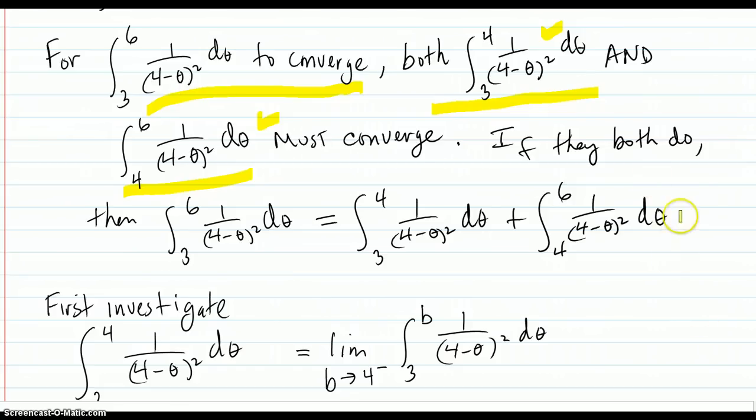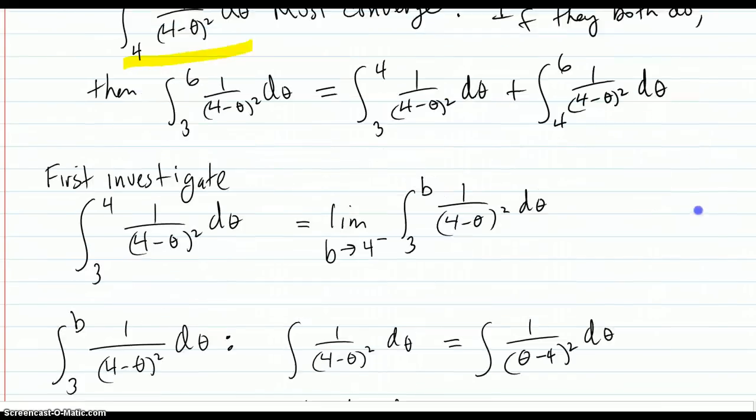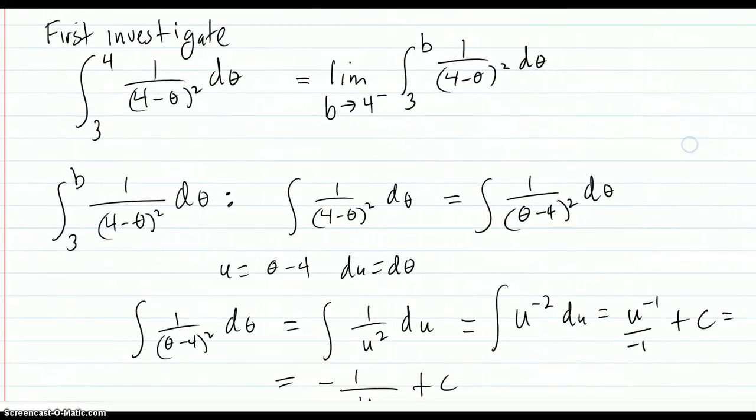So first, let's just take one step at a time, let's investigate the left side over here, 3 to 4. So that's, by definition, since at 4 the function is undefined, we're going to inch up towards 4 from the left, going towards 4 with your b.